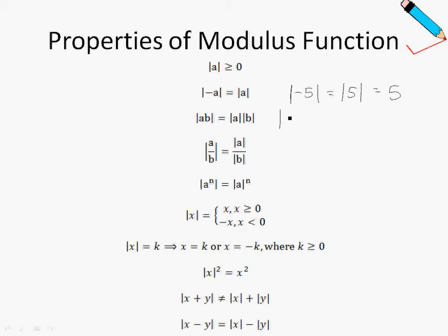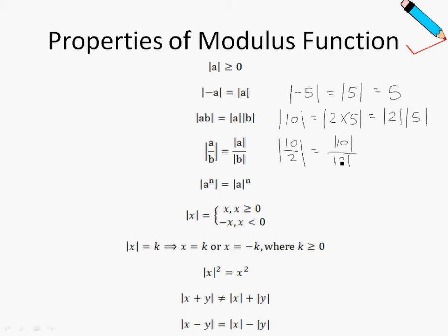The next property: if we have the modulus of 10, and 10 can be written as 2 times 5, we can break this down into mod of 2 multiplied by mod of 5. Similarly, mod of 10 over 2 can be broken down to mod of 10 over mod of 2. Also, the modulus of 2 to the power of 5 can be written as modulus of 2 to the power of 5. The remaining properties will be more important in the later part of this chapter.